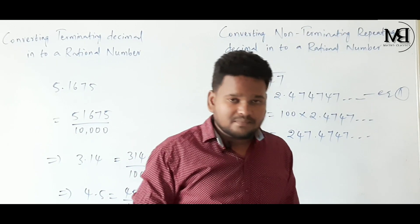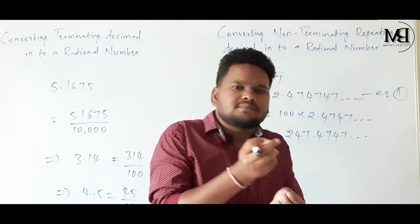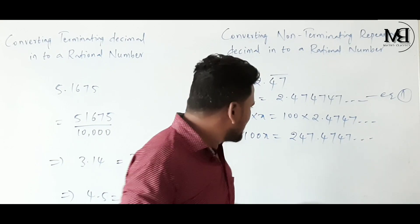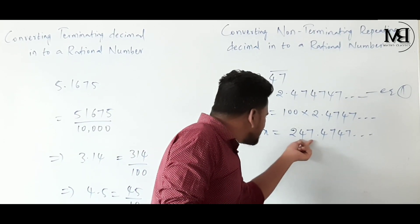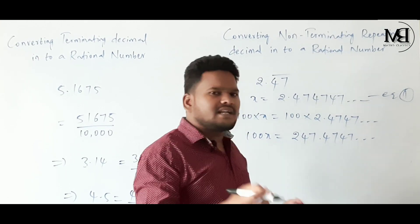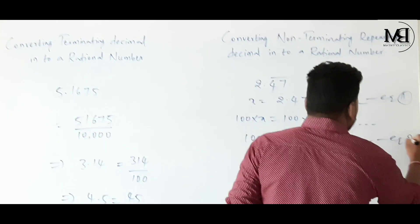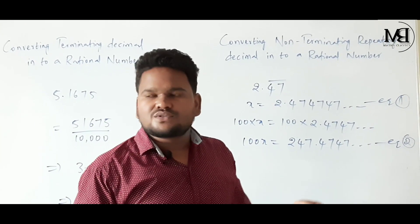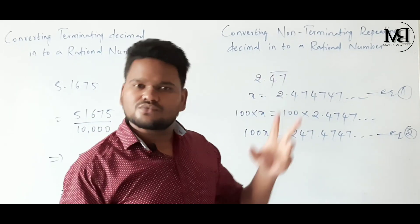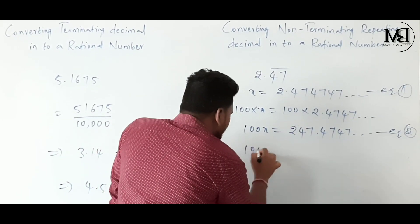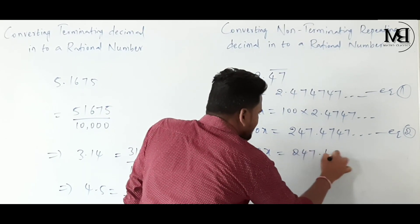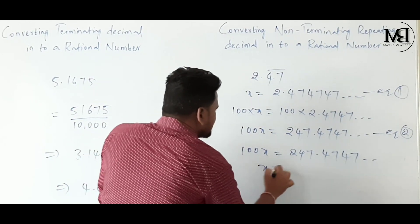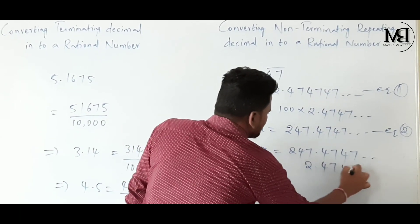The decimal point is now after the repeated digits 47, so we consider 100X = 247.4747... as equation 2. Point number 3: subtract equation 1 from equation 2. Equation 2: 100X = 247.4747...; equation 1: X = 2.4747...